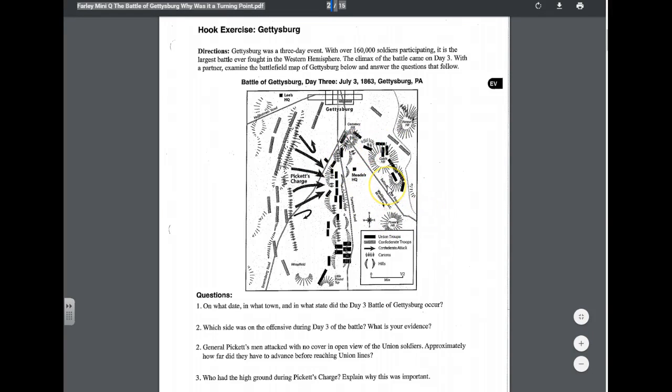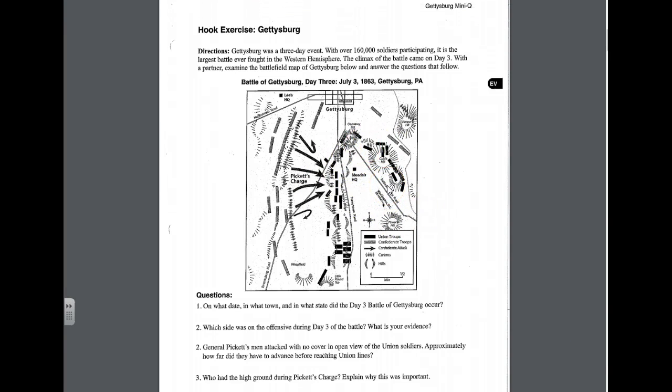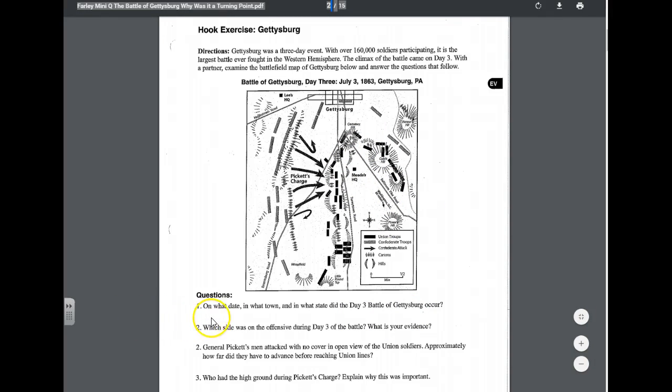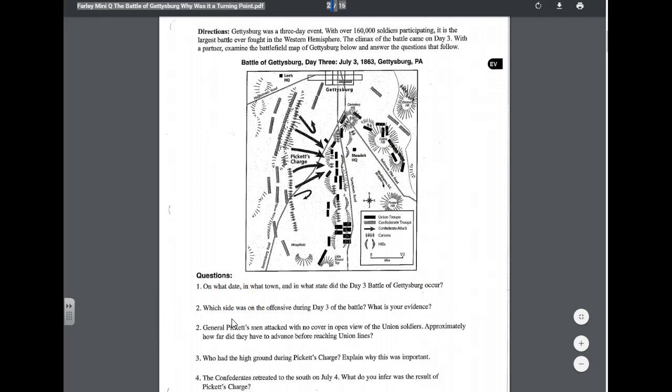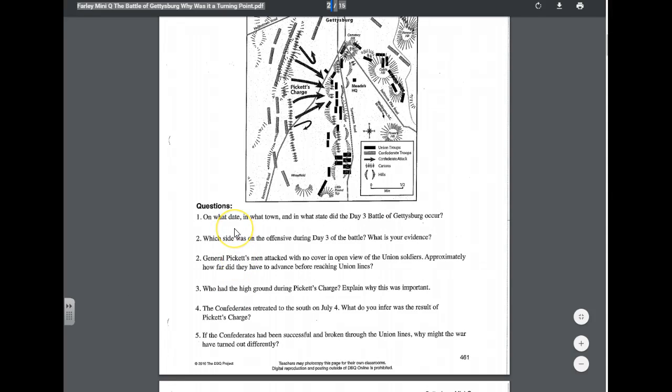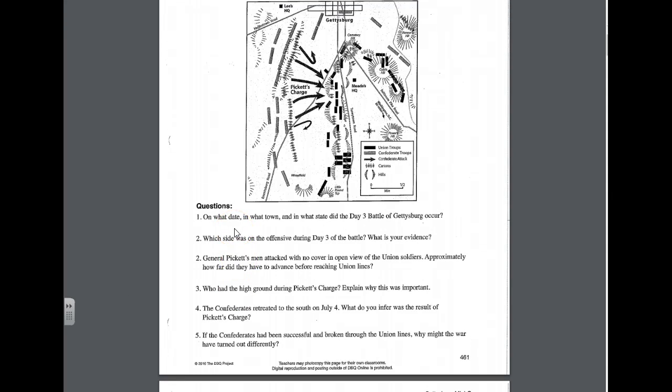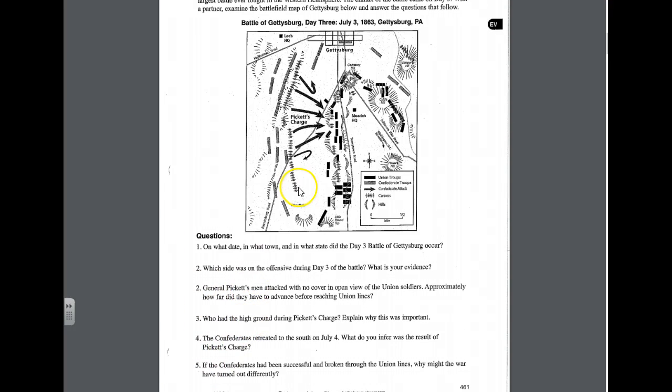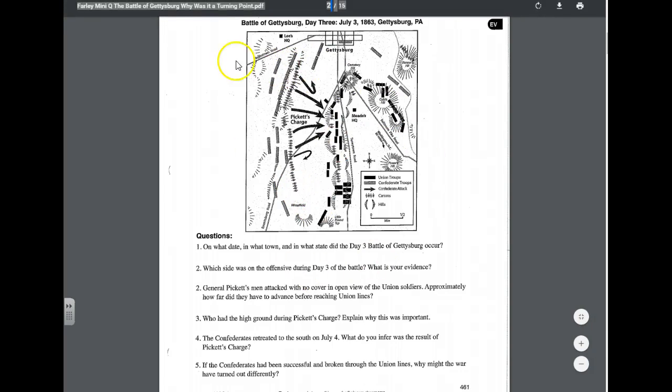After studying the battle map of day three, I want you, with your partner, to go down now and answer questions one through five. And if you look here, there is a typo on the questions underneath the hook exercise. You've got question one and you've got two question twos. So make sure you answer both questions two, then three, four, and five. Use the map and use the title of the map to answer the questions.